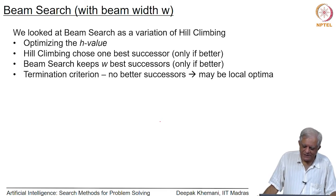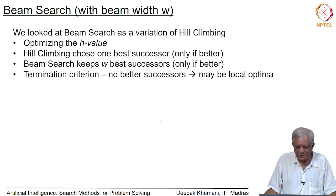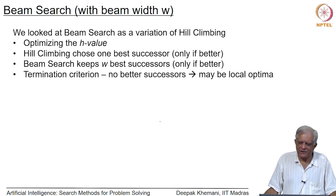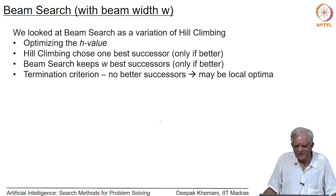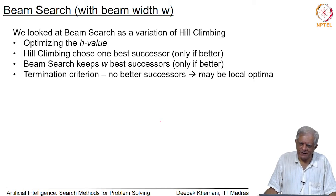This happens because both hill climbing and beam search move to successors only if they are better — that is why we call them steepest gradient ascent or descent algorithms, moving along the slope until the slope becomes zero. Now let us look at how we can adapt this idea of beam search. The basic idea is that at every level as you go deeper into the search tree, you keep only a fixed number of nodes called the beam width w.